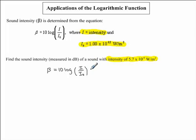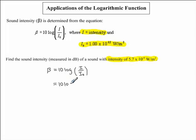We have that i represents the intensity, and we are told that a sound has an intensity of 5.7 times 10 to the exponent negative 9. So we can replace the variable i with what it equals. We have 10 times the logarithmic function — and instead of writing i, we write 5.7 times 10 to the exponent negative 9.